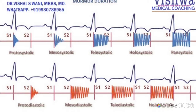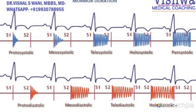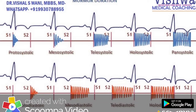Similarly, we also have diastolic murmurs: proto-diastolic, meso-diastolic, tele-diastolic, and holo-diastolic. There are different types of valvular disorders which can produce these types of murmurs. But primarily, these are the important types of murmurs we can hear during the auscultation of the heart. Thank you very much.